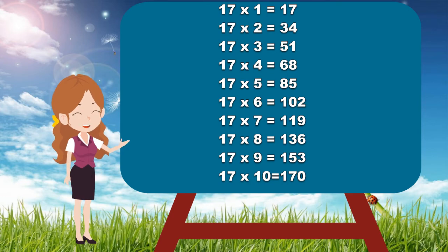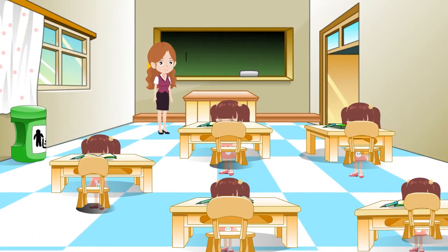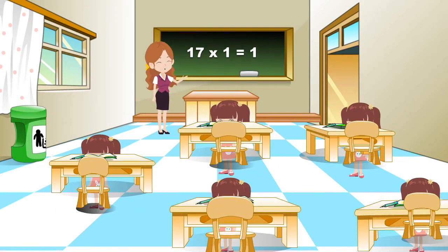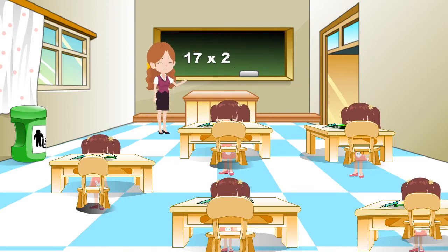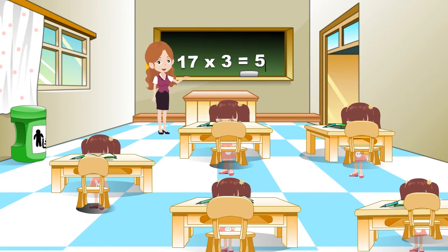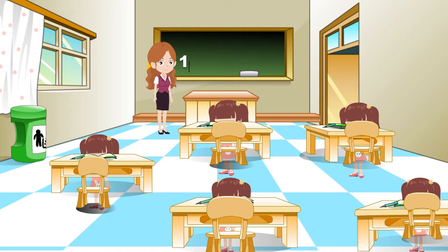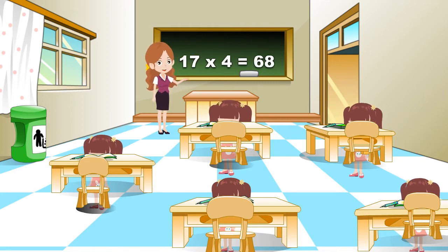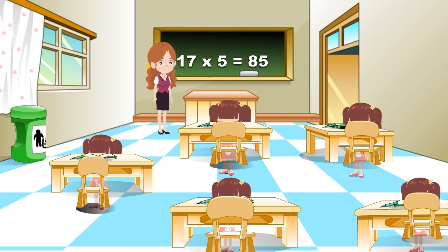repeat this table with me. 17 ones are 17, 17 twos are 34, 17 threes are 51, 17 fours are 68, 17 fives are 85,